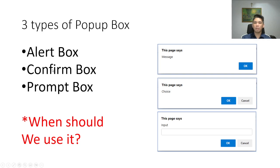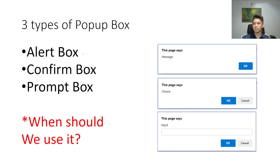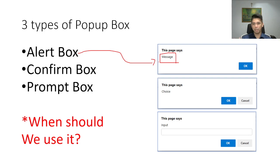Let's talk about the three different pop-up boxes. We have the alert box, we have the confirm box, and we have the prompt box. In an alert box, we just provide a message to the users of the website, particularly on one page.